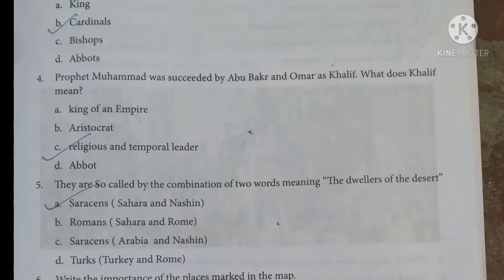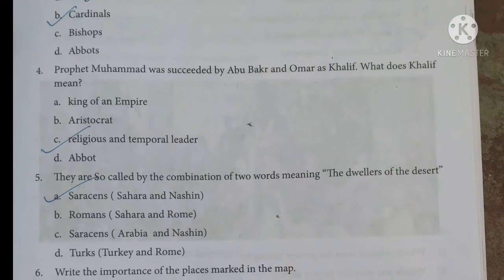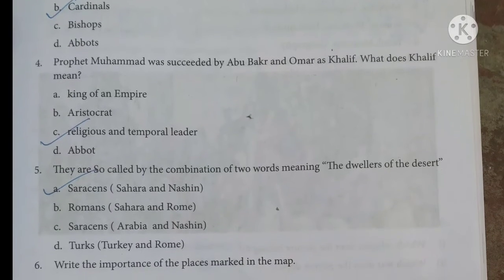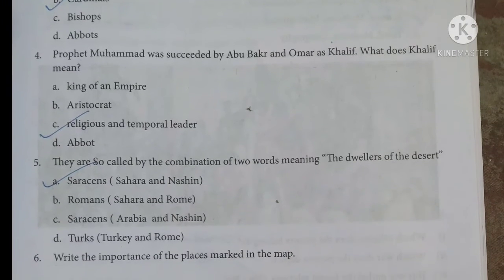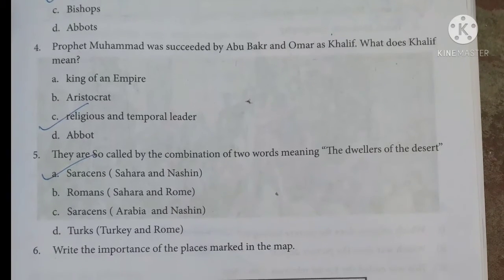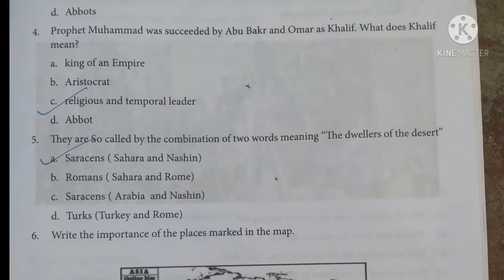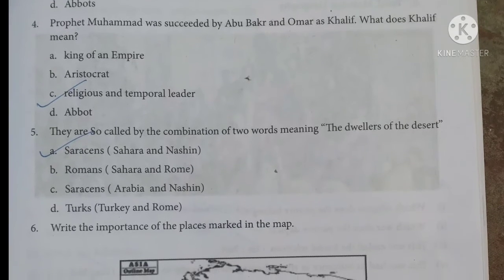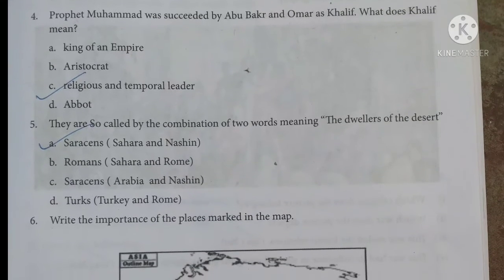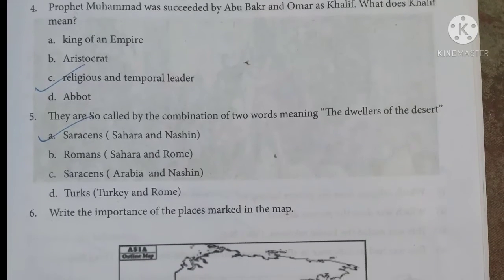The fourth question: Prophet Muhammad was succeeded by Abu Bakr and Omar as Caliph. What does Caliph mean? The answer is option C — religious and temporal leader.